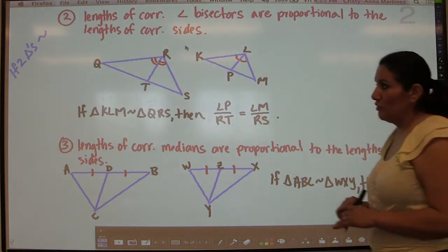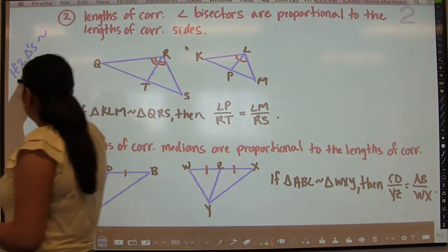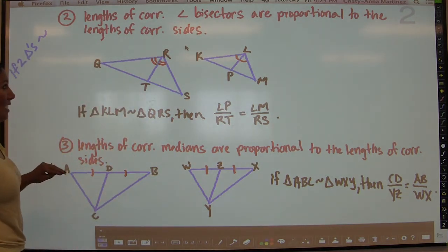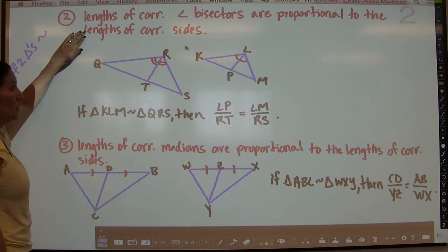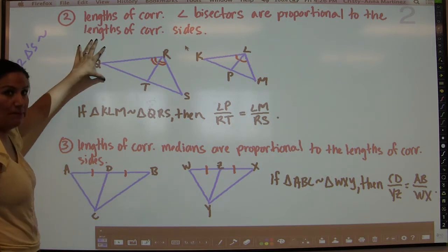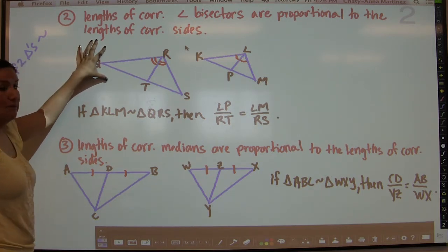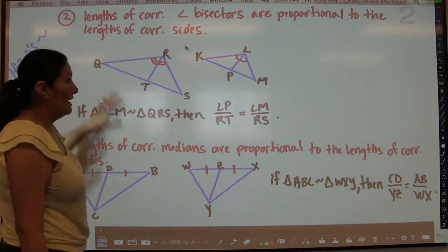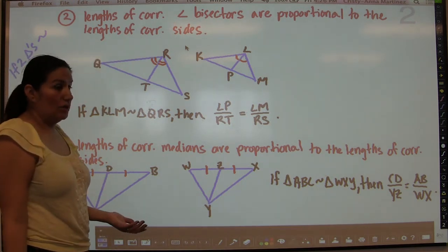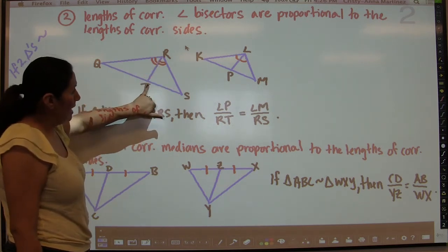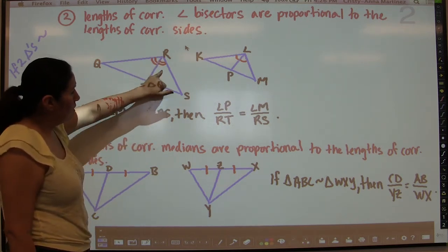Just to remind you, the hypothesis is the same — the two triangles have to be similar. The second theorem states that the lengths of corresponding angle bisectors are proportional to the lengths of the corresponding sides. The angle bisector basically bisects the angle into two congruent parts.